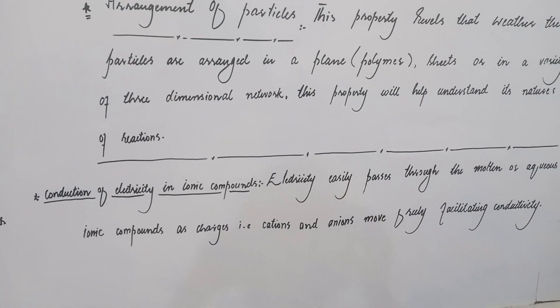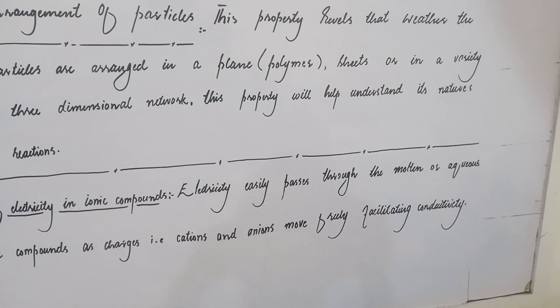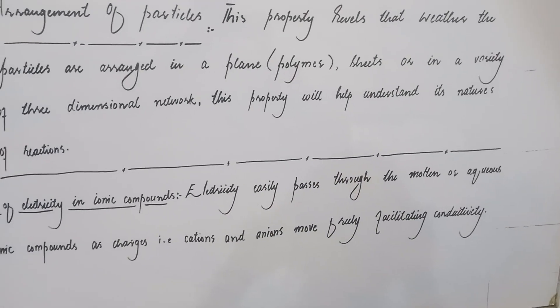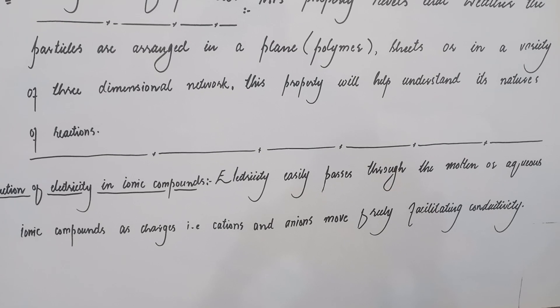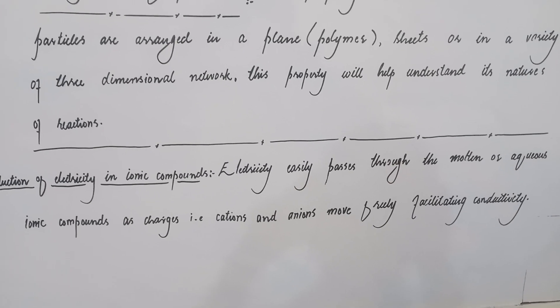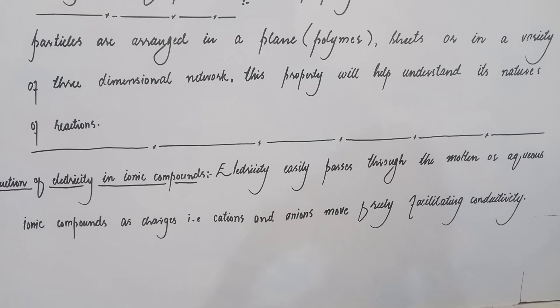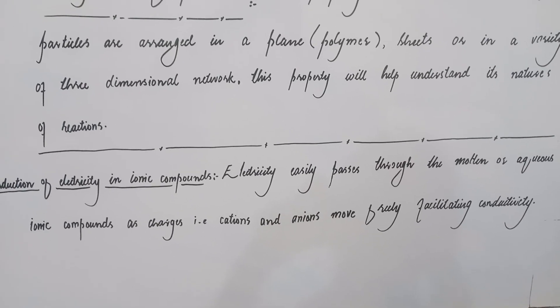Conduction of electricity in ionic compounds: electricity easily passes through the molten or aqueous ionic compounds as charges, i.e., cations and anions move freely, facilitating conductivity.